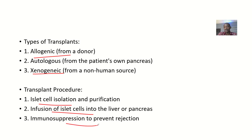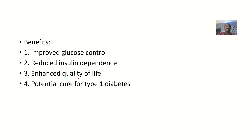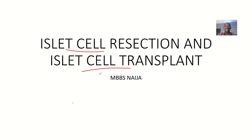The transplant procedure is: you collect the islet cells, isolate and purify them, then infuse the islet cells into the liver or pancreas, and then immunosuppress the person to prevent the immune system from rejecting the cells. The benefits include improved glucose control, reduced insulin dependence, enhanced quality of life, and it's a potential cure for type 1 diabetes.